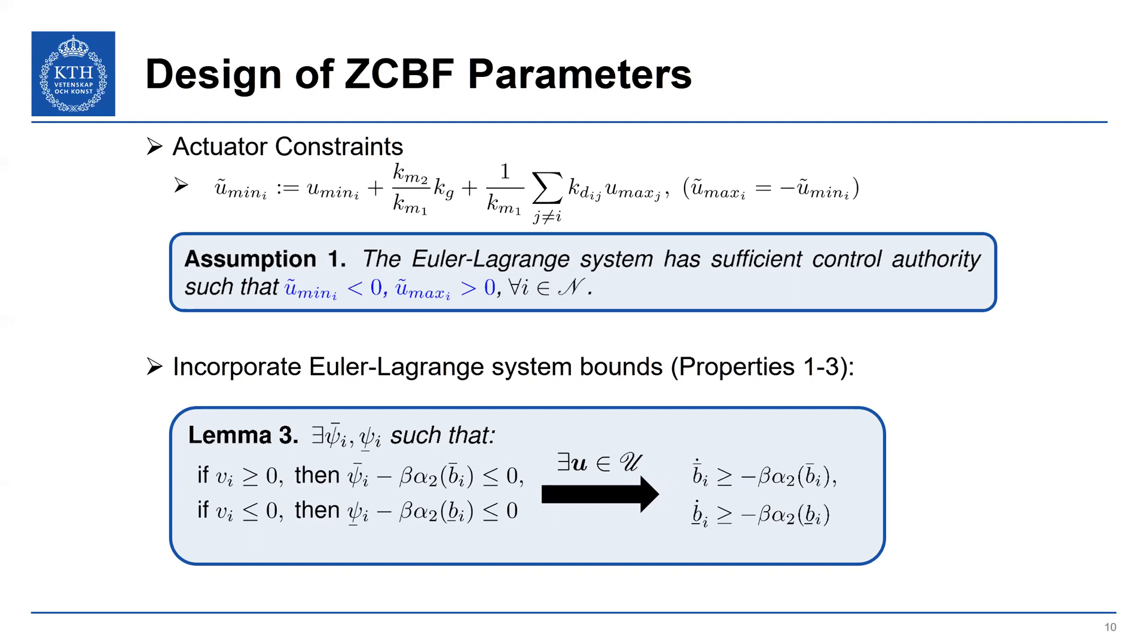And so with this, we can then go to lemma 3, where we use these bounds. So these k_m2, k_m1, k_g, these are the bounds of our Euler-Lagrange systems. And with these, we can show that there exists, by construction, functions psi_i, upper and lower bar, such that if these conditions are satisfied, so psi_i minus beta of alpha_2 is non-positive, and psi_i_lower_bar minus beta of alpha_2 is non-positive,